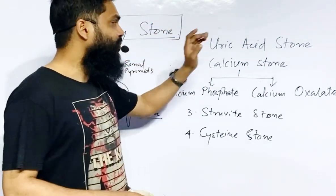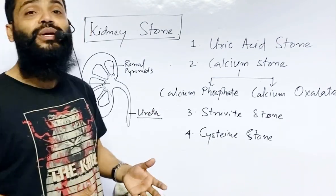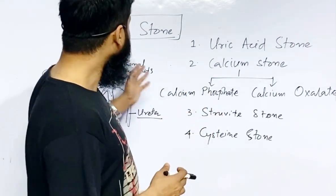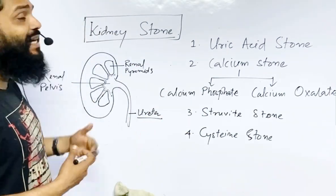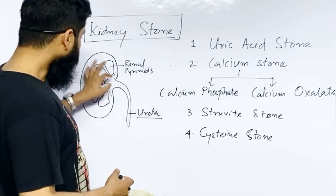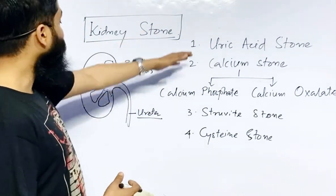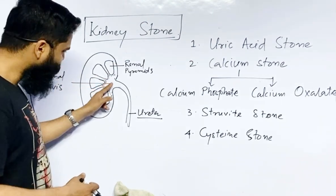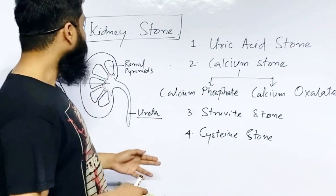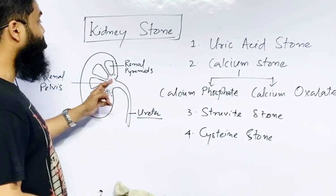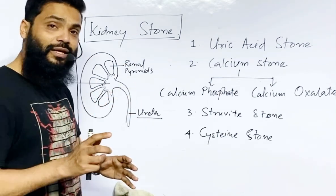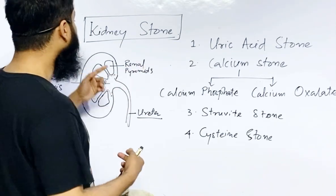Let's talk about uric acid stone. Before that, we have to understand when uric acid stones can be formed. Whenever the level of uric acid is higher in our blood, our kidneys start filtration of that uric acid from the blood. With the help of nephrons, it accumulates uric acid here in the renal pelvis. These grooves are called renal calices. The triangular bodies here are called renal pyramids, which hold our nephrons, and these nephrons are responsible for filtration of uric acid from our blood.